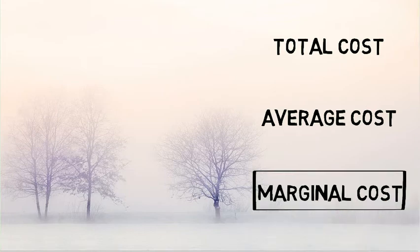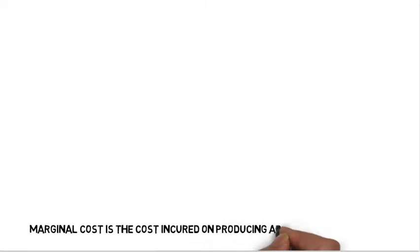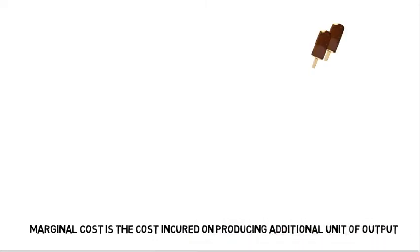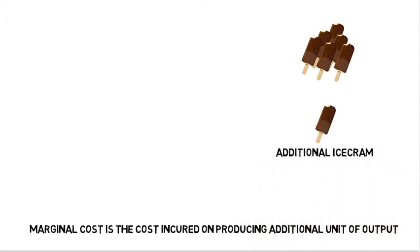Now let us look at what is meant by Marginal Costs. Marginal Cost is the cost incurred by the firm for producing an additional unit of output. Say, as a firm you have produced 10 ice creams. The cost that you incur on producing the 11th ice cream is called as the Marginal Cost. If you have produced 11 ice creams, then the cost of producing an additional unit, that is the 12th ice cream, is the Marginal Cost. I hope that made sense.